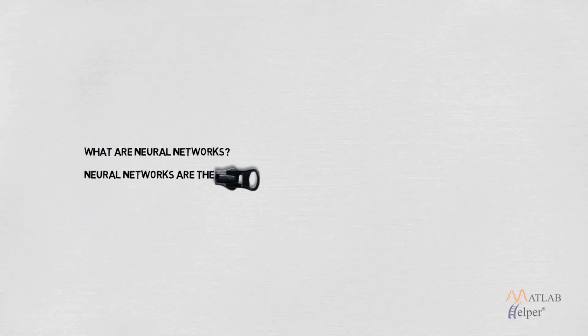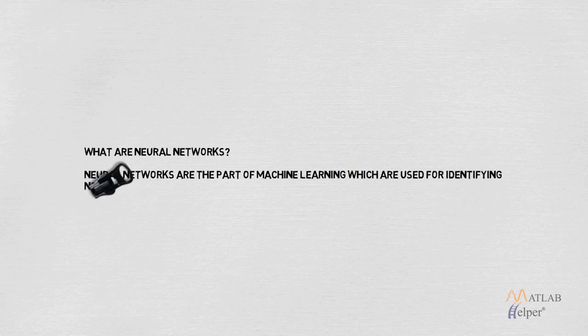So what are neural networks? Neural networks are the part of machine learning which are used for identifying nonlinear relation between input and output using some inbuilt mathematics.